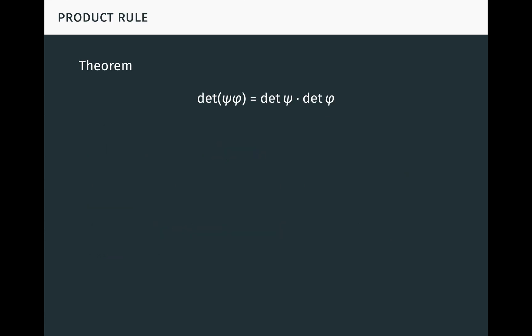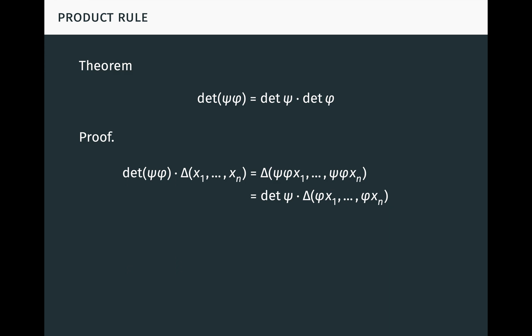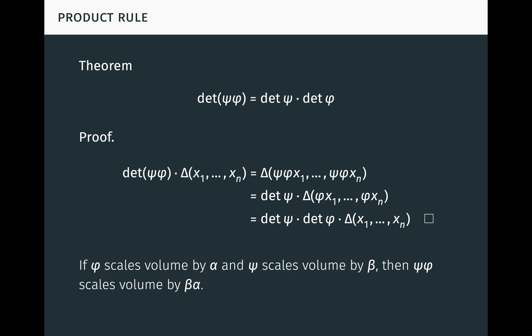Another important property of the determinant function is that it is multiplicative: the determinant of a composite psi∘phi equals the product of the determinants of psi and phi. By definition of det(psi∘phi), for any vectors x1 to xn, we have det(psi∘phi) times delta of (phi(x1),...,phi(xn)) equals delta of (psi(phi(x1)),...,psi(phi(xn))), which by definition of det(psi) equals det(psi) times delta of (phi(x1),...,phi(xn)), and by definition of det(phi) equals det(psi) times det(phi) times delta of (x1,...,xn). The result follows since delta is non-zero.